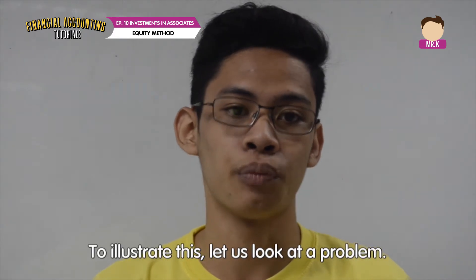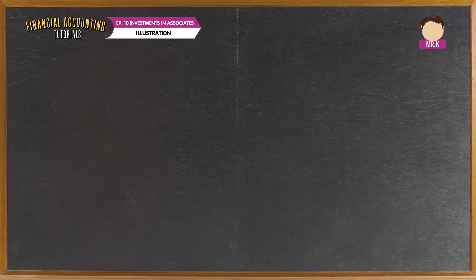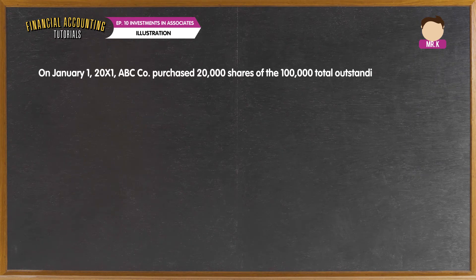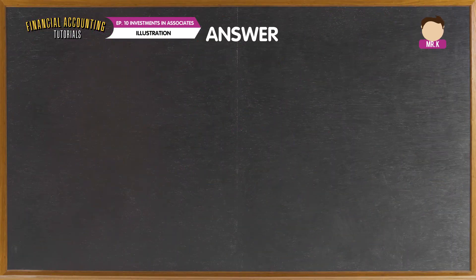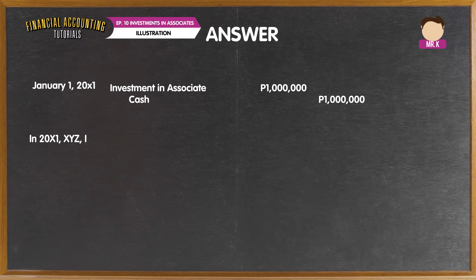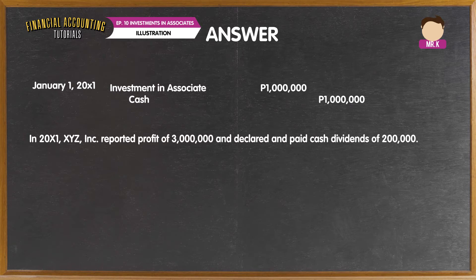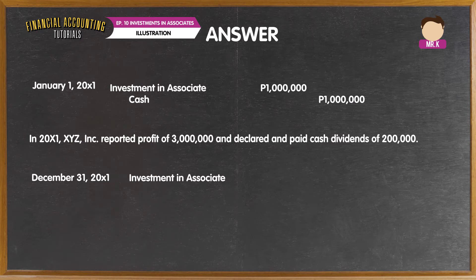Illustration — Purchase Cost Equal to Fair Value of Interest Acquired. On January 1, 20X1, ABC Corporation purchased 20,000 shares of the 100,000 total outstanding shares of XYZ Incorporation for P1 million pesos. XYZ's assets and liabilities approximate their fair values. The entry to record the purchase on January 1 would show a debit to the investment in associate account for P1 million and a credit to cash of the same amount. In 20X1, XYZ Incorporation reported profit of P3 million and declared and paid cash dividends of P200,000. The entry on December 31 to record the share in profit of associates is a debit to the investment in associate account of P600,000 and a credit to the share in profit of associate account of the same amount.